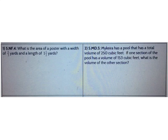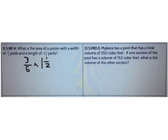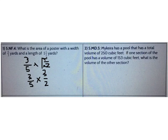We'll start with our do now. What is the area of a poster with a width of 3 fifths yards and a length of 1 and 1 half yards? I need to use multiplication, so I'm going to multiply 3 fifths times 1 and 1 half. I need to convert to an improper fraction. 1 and 1 half becomes 3 halves, so 3 fifths times 3 halves equals 9 tenths square yards.